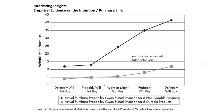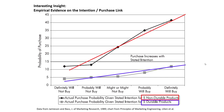Let's take a look at some academic results that have studied this relationship between individual stated purchase intentions and their actual likelihood of making a purchase. Keep in mind that this research is a bit outdated — it's from 1989. In this particular paper, they aggregated many studies that observed people's intentions and then later observed whether or not they made a purchase. They then split their intention and purchase probabilities by two different types of goods: durables and non-durables.